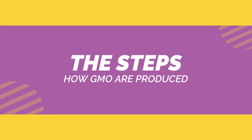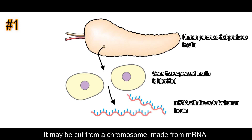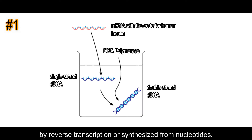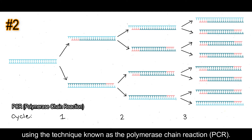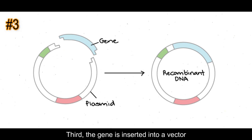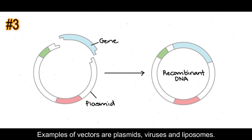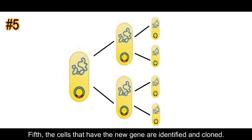There are many different ways in which a GMO may be produced, but these steps are essential. First, the gene that is required is identified — it may be cut from a chromosome, made from mRNA by reverse transcription, or synthesized from nucleotides. Second, multiple copies of the gene are made using the technique known as the polymerase chain reaction, or PCR. Third, the gene is inserted into a vector which delivers the gene to the cells of the organism — examples of vectors are plasmids, viruses, and liposomes. Fourth, the vector takes the gene into the cells. Fifth, the cells that have the new gene are identified and cloned.